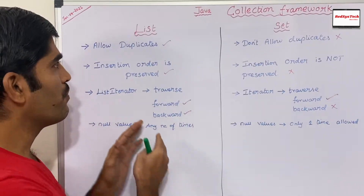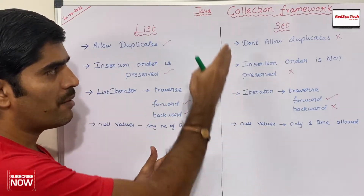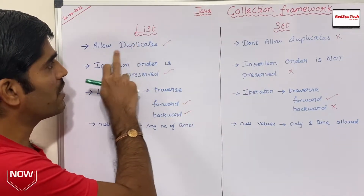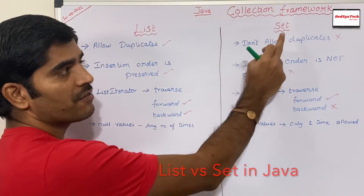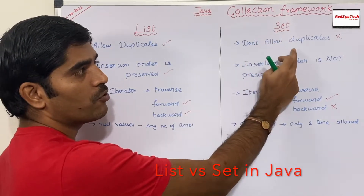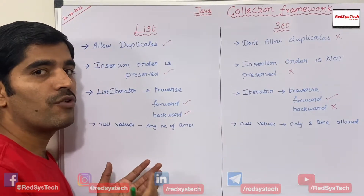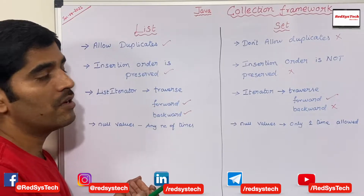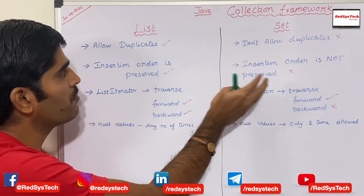List and Set both come under the collection framework, but List can allow duplicates, whereas Set won't allow duplicates. So in terms of List, if you want to allow duplicates, it is allowed, but in terms of Set, it won't allow it.